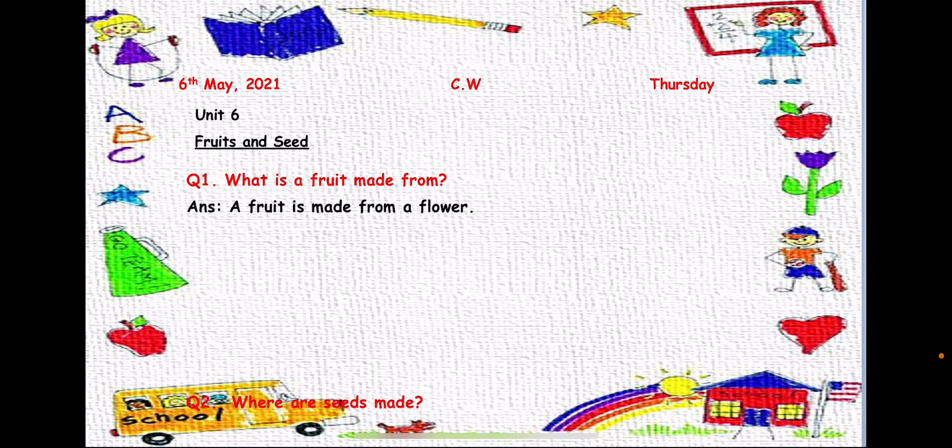Question number 2: Where are seeds made? So where do you find the seeds? Yes, when you cut any vegetable or any fruit, you will find it inside. So we will write the answer: The seeds are made inside the fruits and flowers. You always find the seeds inside the flower or inside the fruit, any kind of fruit and vegetable.